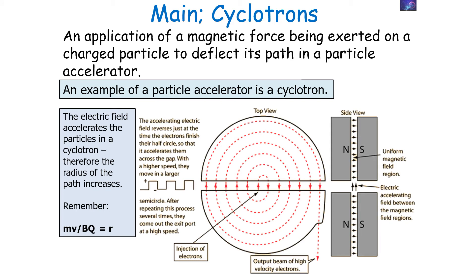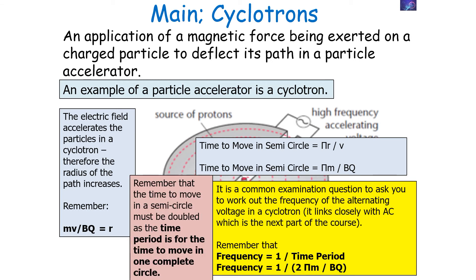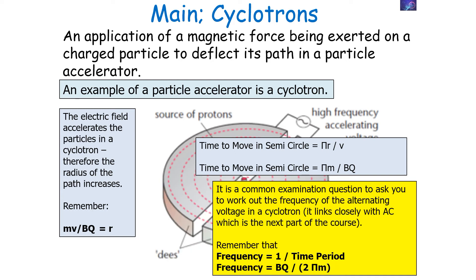The electrical field accelerates the particles in the cyclotron, so the radius of the path increases since r = mv / Bq. We can work out the frequency of the alternating voltage: frequency is 1 / time period. The time period — the time for one complete circle — is double the semicircle time, giving 2πm / Bq. Rearranging, the frequency of the alternating potential difference is f = Bq / 2πm.